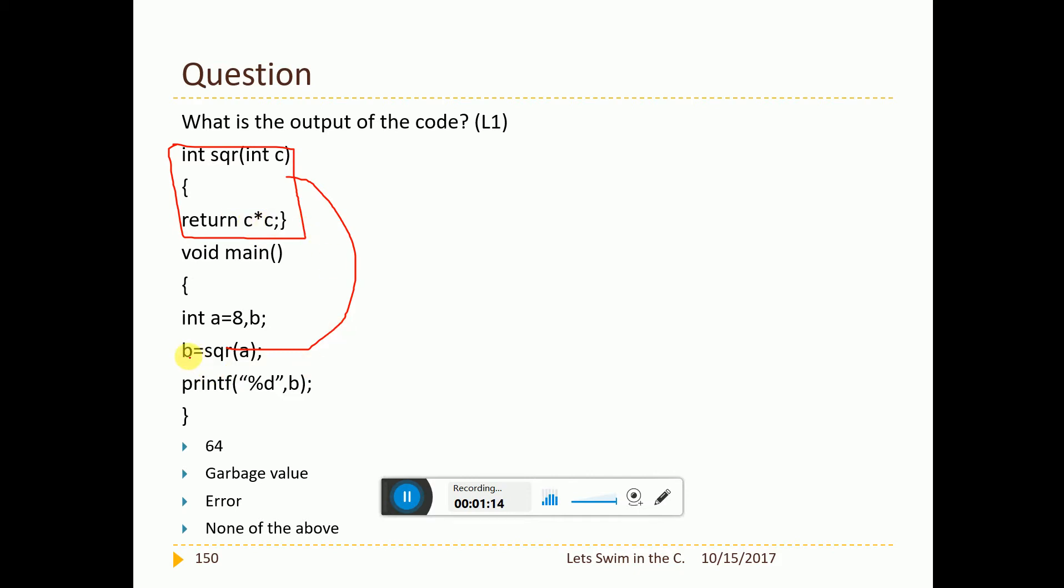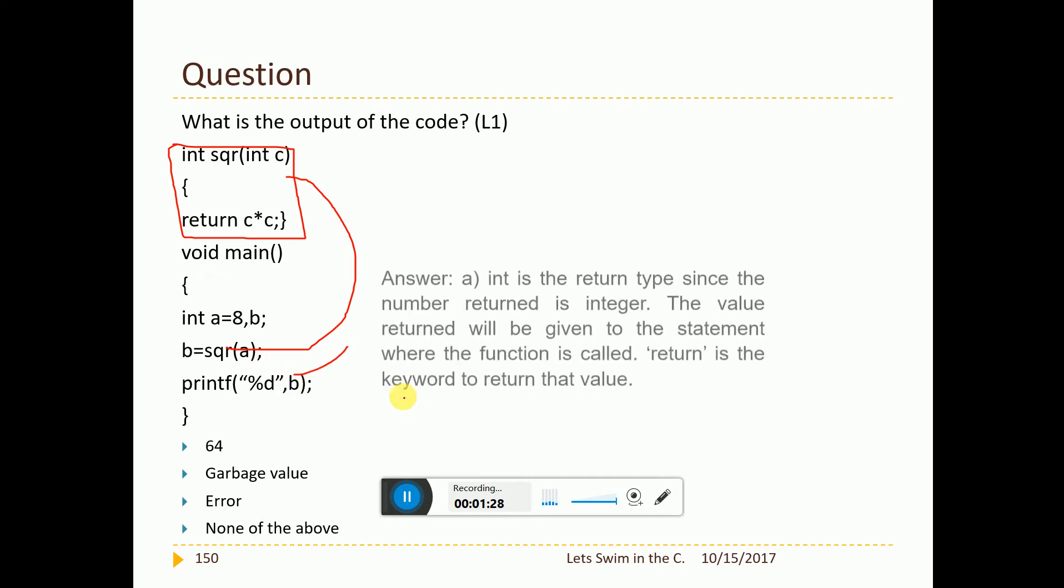So understand that. This is the way we call it as call by value. I am sending the copy and I am receiving the copy back and I am not affecting the basic variables content. Now B equal to square of A. Now B is printed. So answer should be 64.